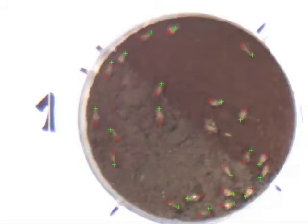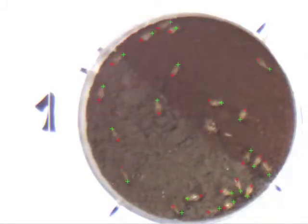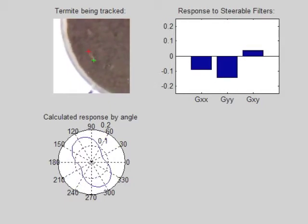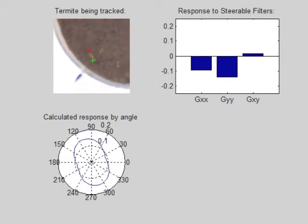I find the orientation of the termites by finding the direction of the steepest second-order derivative. I first measure the response to the steerable filters representing the XX, YY, and XY derivatives. From these responses, I can calculate what the response would have been into an arbitrary angle and take the maximum.